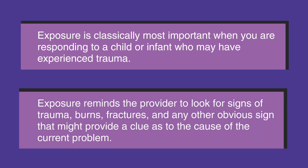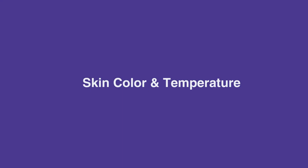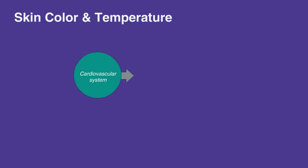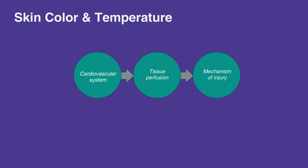Exposure reminds the provider to look for signs of trauma, burns, fractures, and any other obvious sign that might provide a clue as to the cause of the current problem. Skin temperature and color can provide information about the child or infant's cardiovascular system, tissue perfusion, and mechanism of injury.